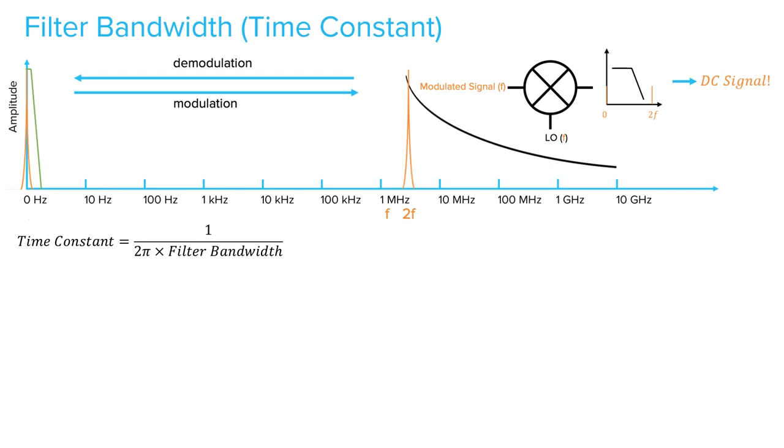A narrower filter bandwidth provides better signal selectivity. Therefore, a better signal-to-noise ratio. However, it's not always appropriate to use a very narrow filter.